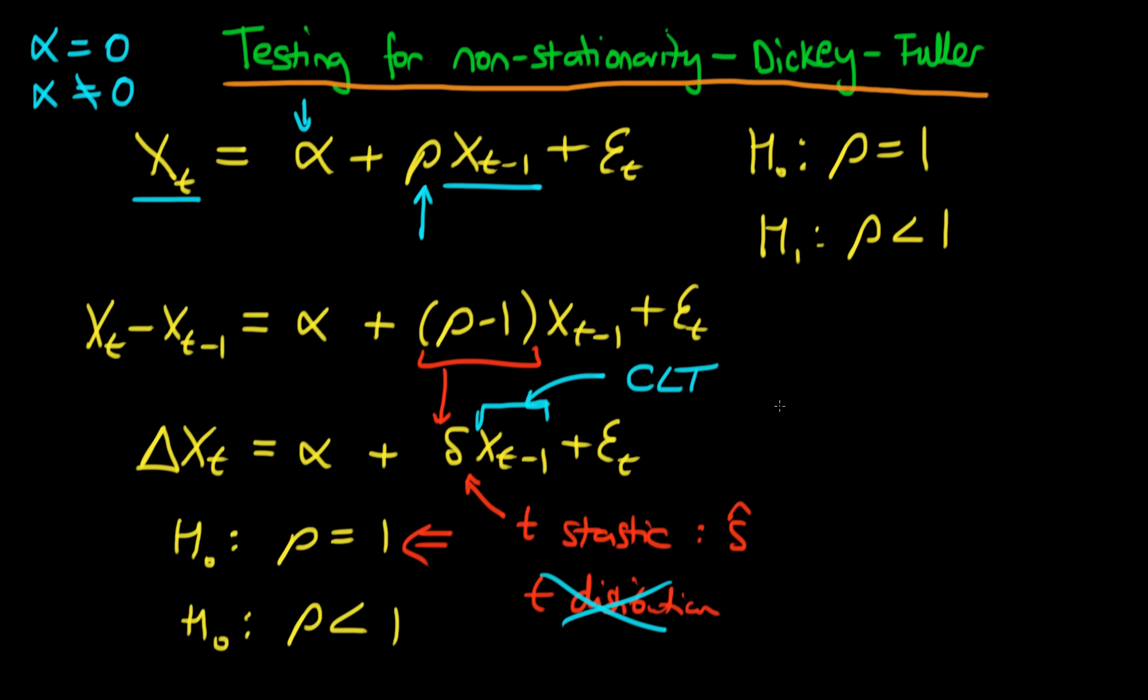What can we actually do? Well, it turns out all is not lost, because thanks to Dickey and Fuller, who actually tabulated the asymptotic distribution of the least squares estimator for delta under the null hypothesis of it being a unit root.